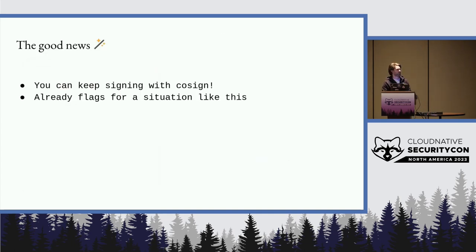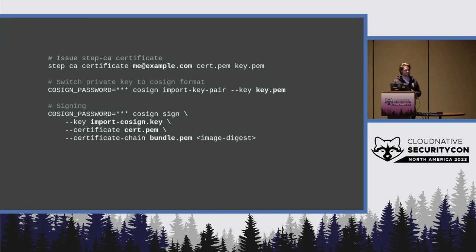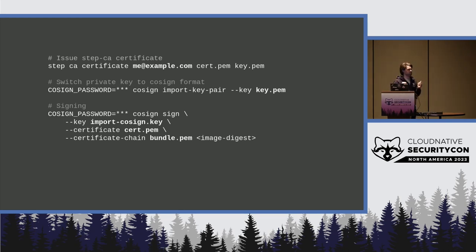The good news — and you know bad news is coming — is that you can keep signing with Cosign. It already has flags for exactly this situation. If you're using StepCA, you can get a certificate with 'step ca certificate' for me@example.com. Cosign needs a particular format for the private keys, so you use the import-private-key command to structure it correctly. Then you do 'cosign sign', point to the private key (which you throw out right after signing — that's the keyless aspect), point to the certificate, have a root bundle that chains to your root, and point to your image.